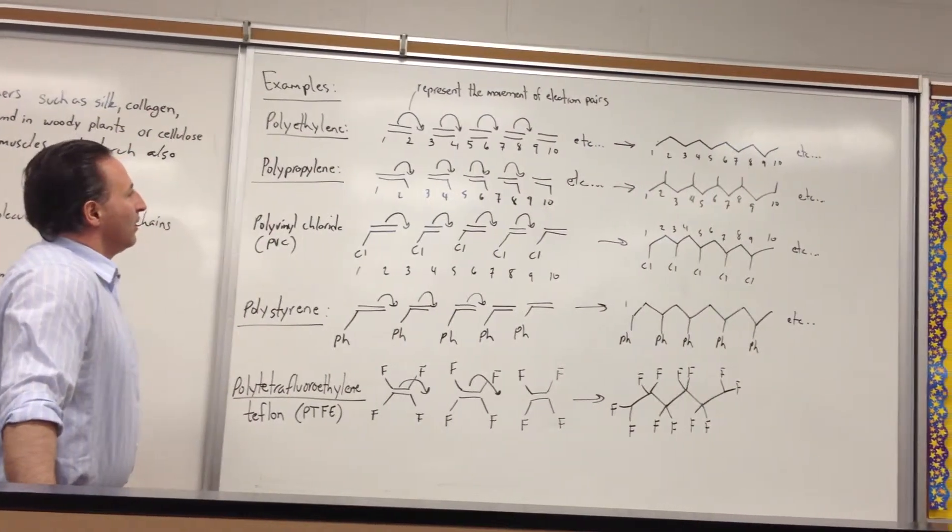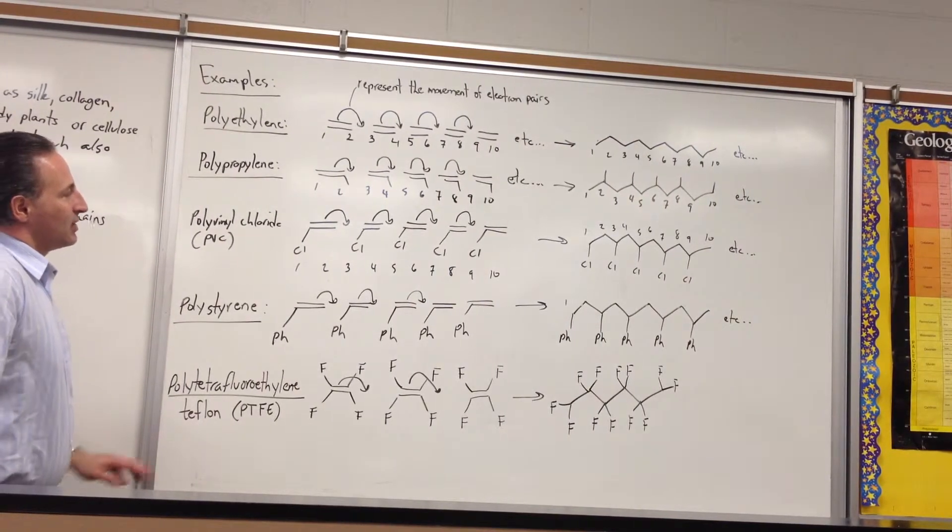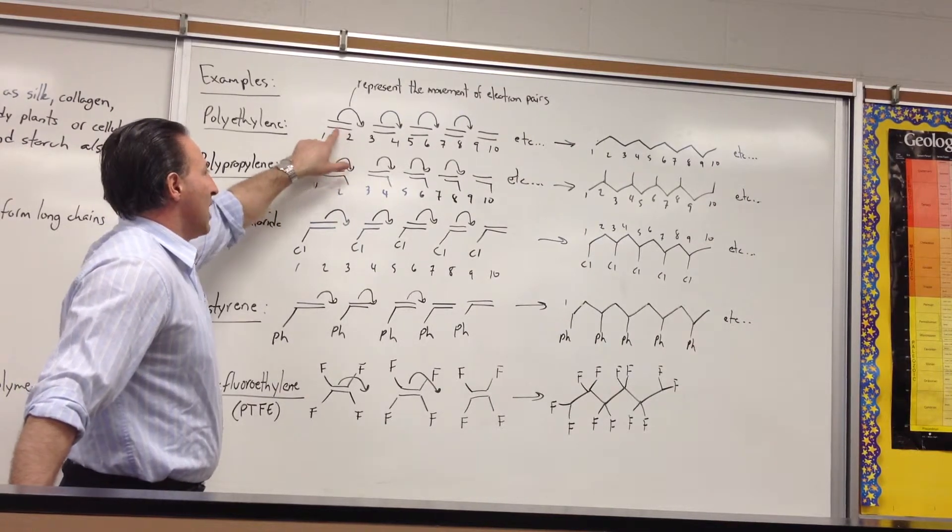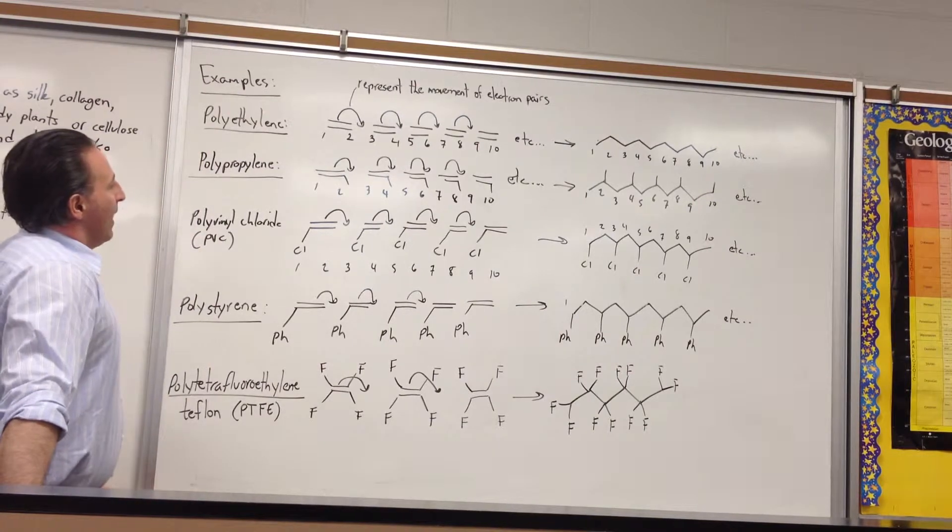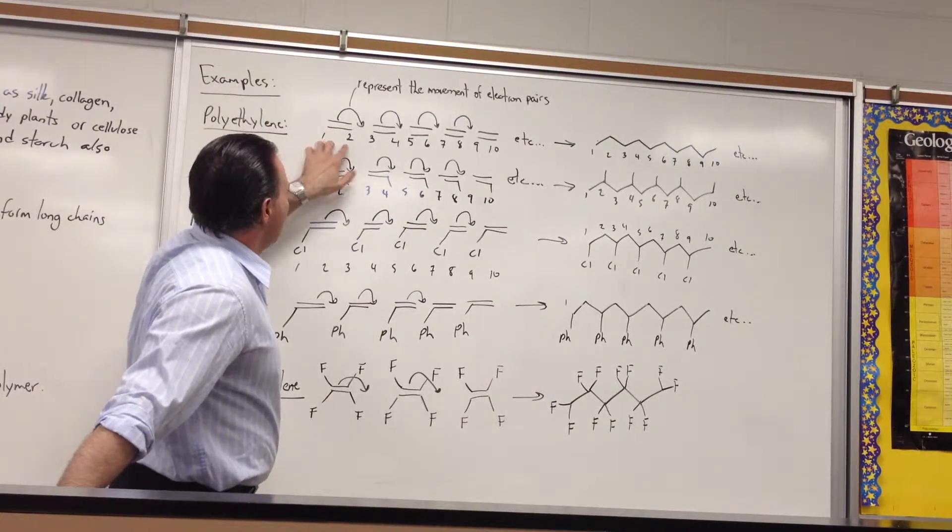We have, for example, polyethylene, very often symbolized as PET. And it's made of, I've used bondline notation to depict the monomers, two carbon atoms. There's a hydrogen atom at each corner there. And the arrow here shows the movement of electrons.